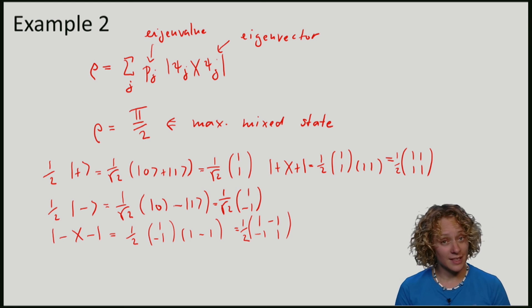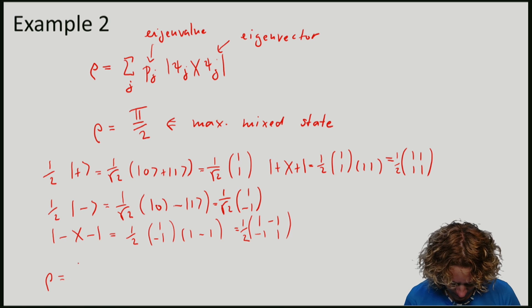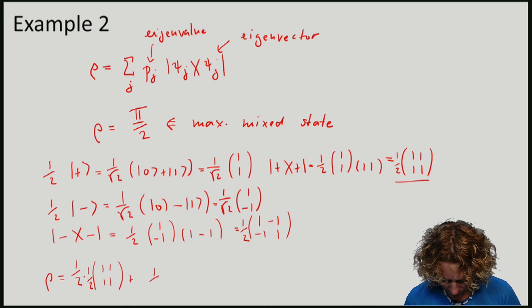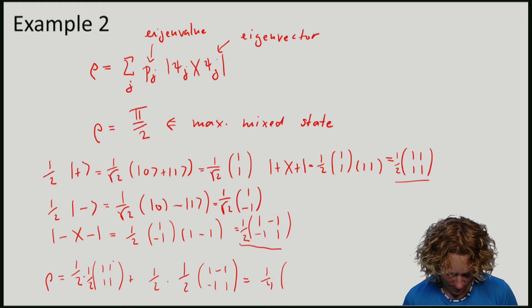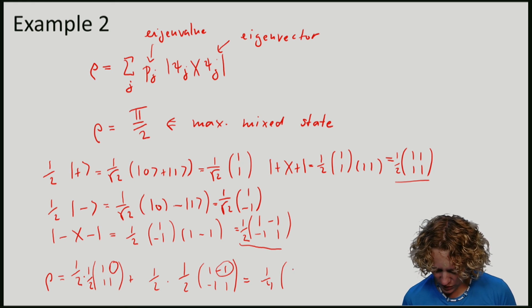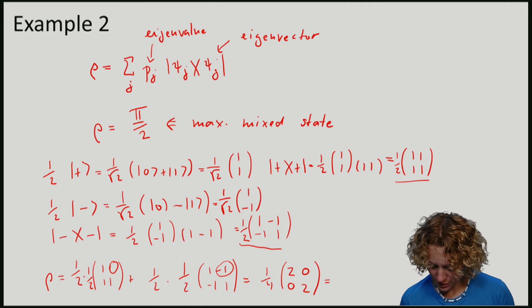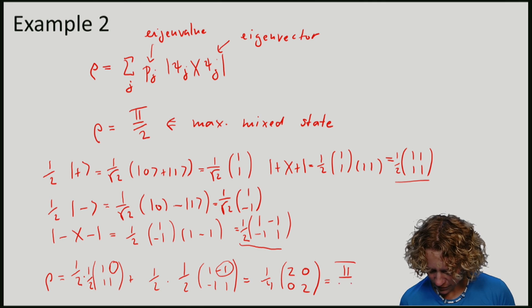Now if I compute the density matrix of this process, again by averaging: a half times a half times (1, 1, 1, 1) plus a half times (1, minus 1, minus 1, 1). We have a quarter, so note that the terms with the minus 1 cancel against the terms with the 1, which gives me (2, 0, 0, 2), which if I take the quarter into account, again gives me the identity matrix over 2.